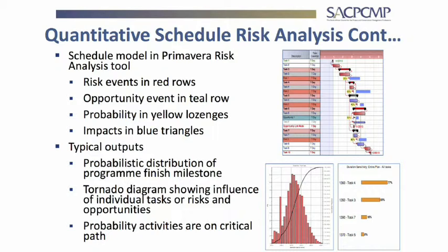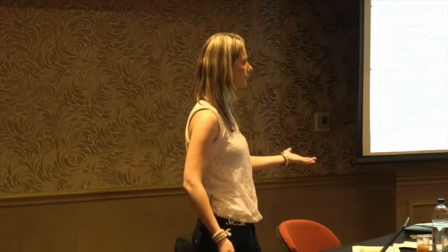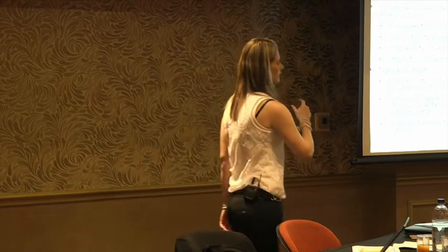It's garbage in, garbage out — the accuracy depends on how well the schedule was built and how realistic your risk workshop was, including likelihood and impact estimates. At the bottom you get a histogram distribution. You can ask for a P50 or P70 on schedule: if there's a 70% chance of overrunning, when will you finish? The output is a date, not a monetary value — for example, you'll finish August 2016 instead of December 2015.